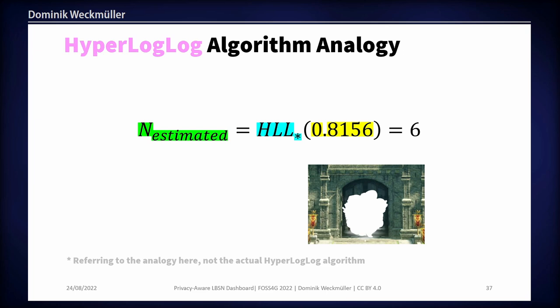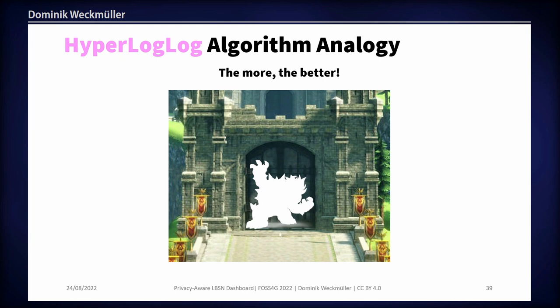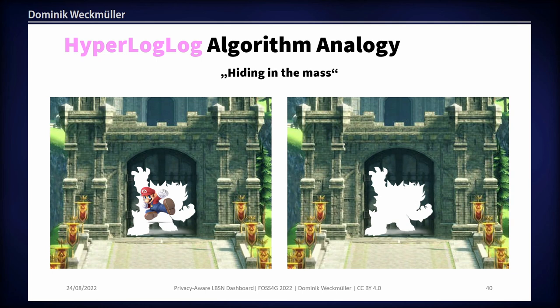HyperLogLog only looks at this combined silhouette — there is no more information about the people themselves. They didn't leave any traces that lead back to them, just a tiny fraction of each individual silhouette that, combined, leads to a different silhouette. This has very particular privacy effects: the more characters join the party, the more people can hide in the silhouette, and the safer it gets.